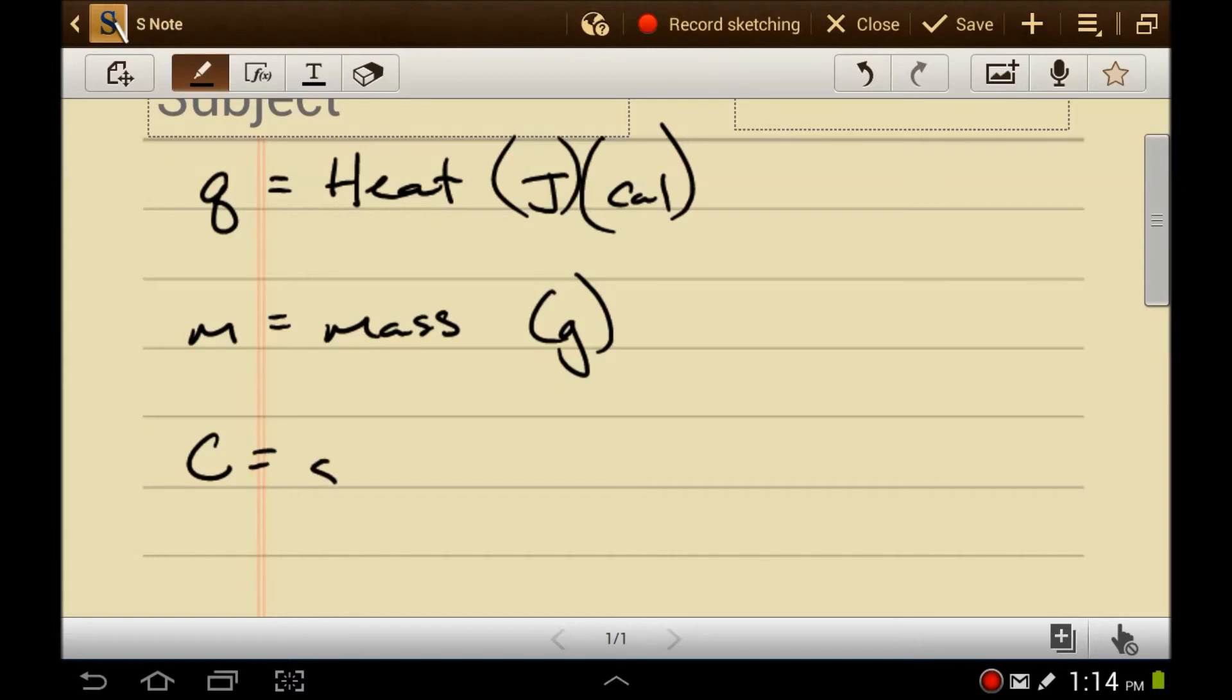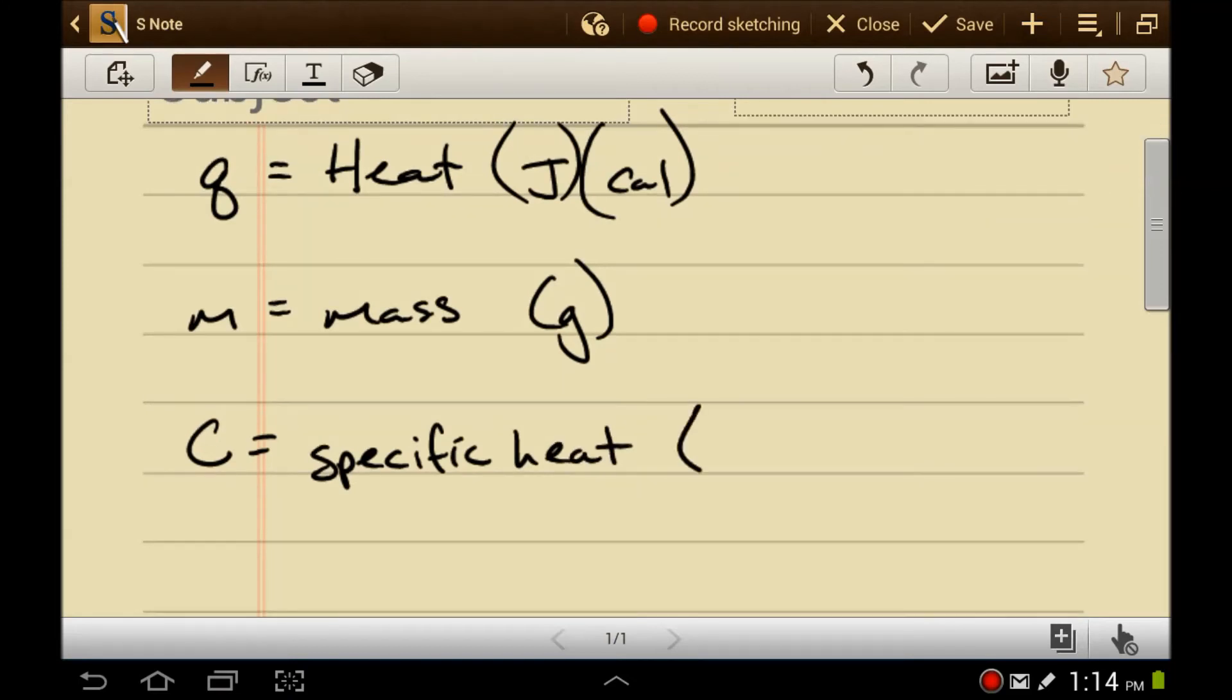C, the specific heat or the specific heat capacity, has units of joules over grams degrees Celsius. So if you see a number and it has the units joules per gram degree Celsius, you know that's a specific heat.